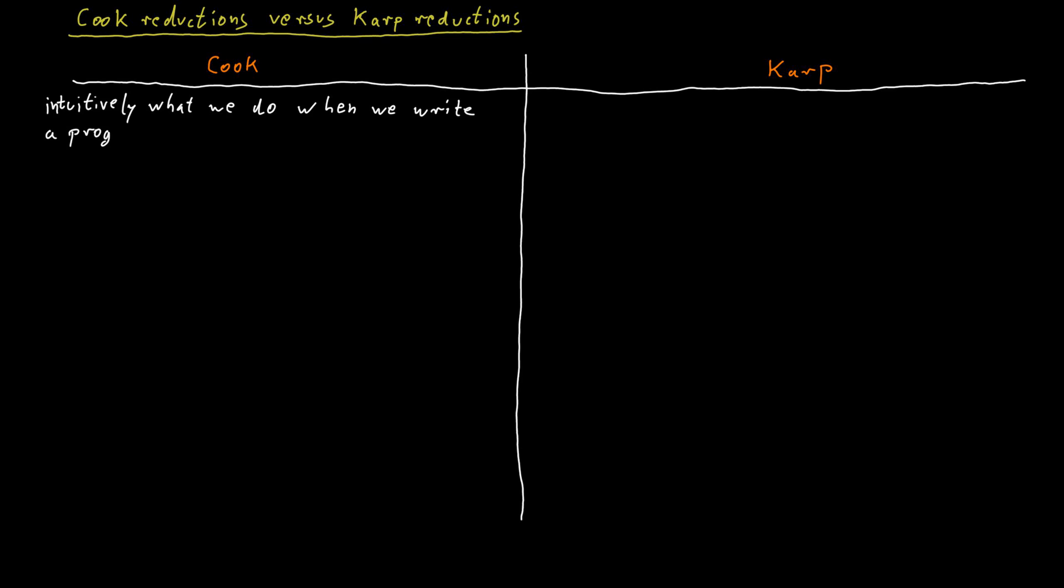It is useful to understand the difference between a Cook reduction and a Karp reduction. A Cook reduction reflects what we intuitively do when we write a program to solve some problem X and we can use some subprocedure that already exists for solving some problem Y.